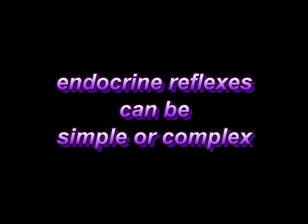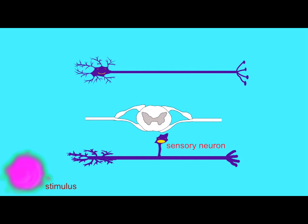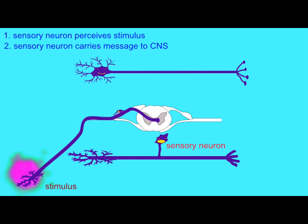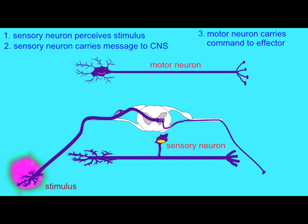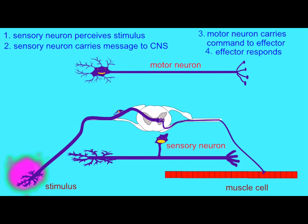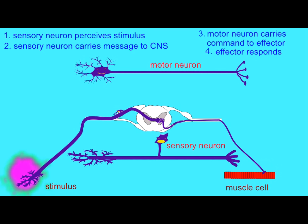The reflexes of the nervous system vary from simple to complex. Some, such as a simple stretch reflex, may only involve two neurons: a sensory neuron which brings sensory information to the spinal cord, and a motor neuron which then takes a command to a muscle cell.